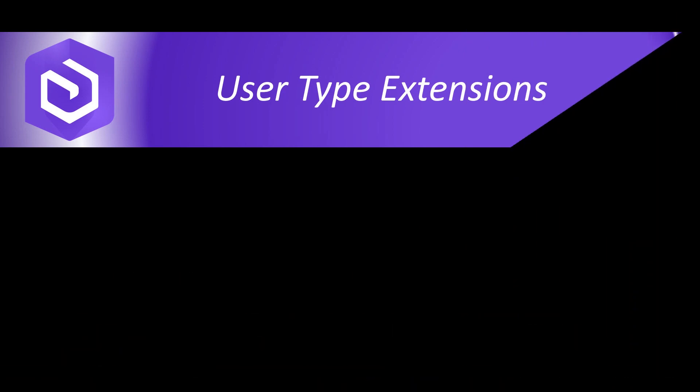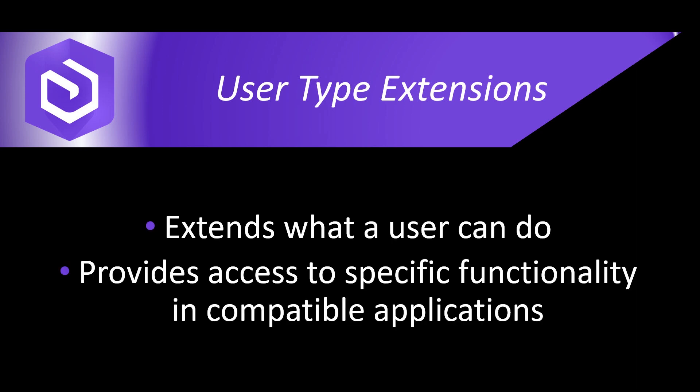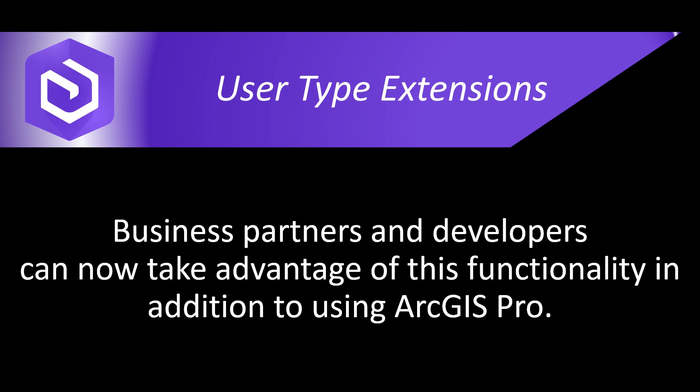First up, user type extensions. We already have user types introduced in ArcGIS Enterprise 10.7. User type extensions build upon that by extending what a user can do by providing access to specific functionality that can be in any compatible application. There are two user type extensions: the utility network service user type extension and the parcel fabric service user type extension. These extensions allow business partners and developers to build and offer their own innovative applications and solutions, in addition to the functionality available when using ArcGIS Pro.